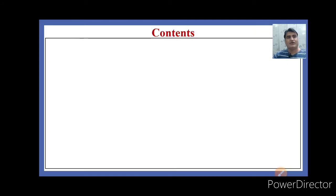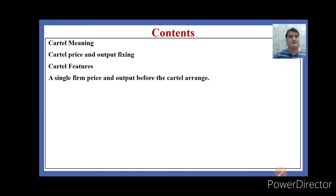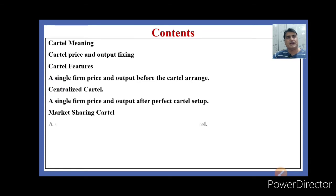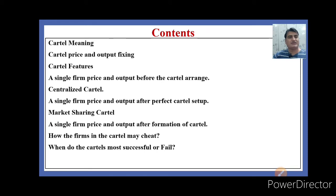In this lecture, we will discuss cartel meaning, cartel price and output, and cartel features. How single firm price and output is decided before cartel formation. What is centralized cartel and how single firm price and output is decided after the cartel setup. What is market-sharing cartel and how firms in the cartel may cheat the rivals. When do cartels become most successful or fail.